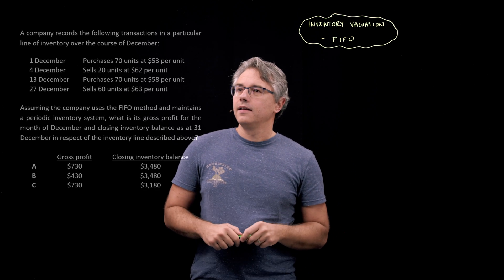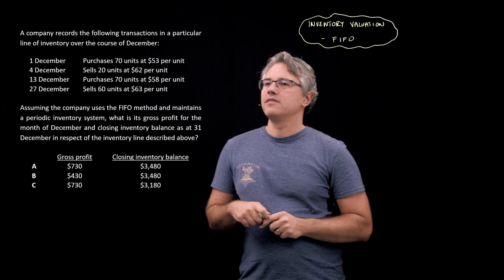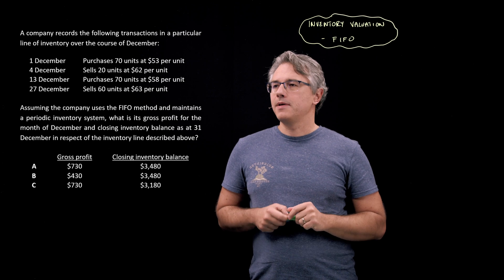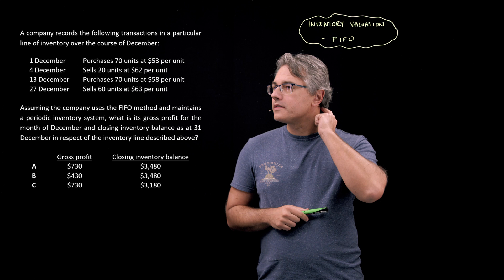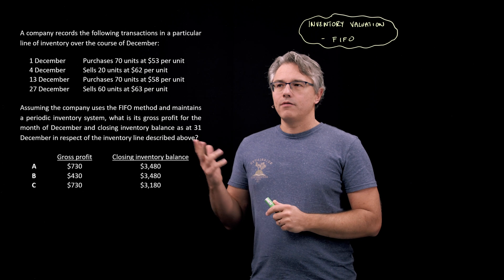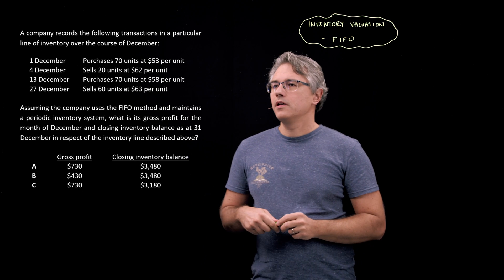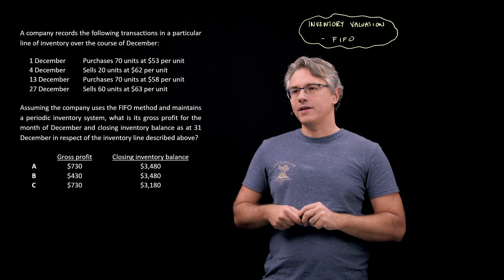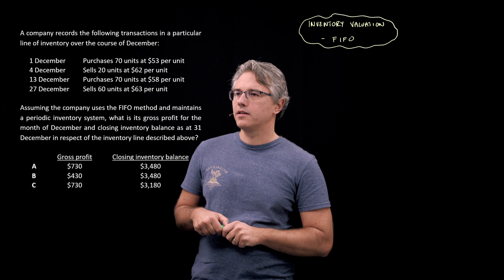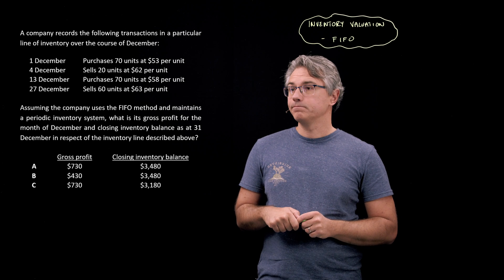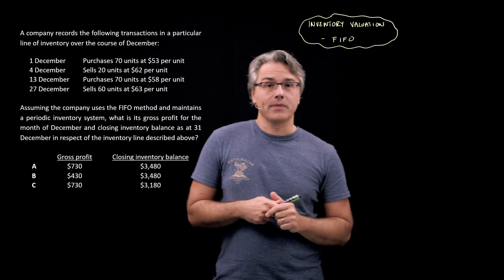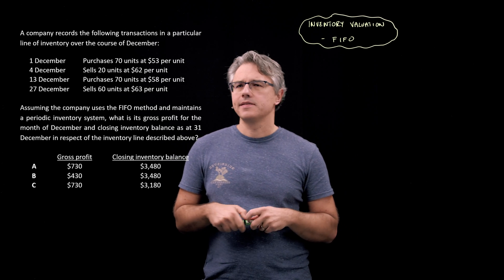If this is something you want to get right in the exam, do keep watching and let's get solving. So this is our question. A company records the following transactions in a particular line of inventory over the course of December. Over the four days mentioned, it makes purchases and sales of different amounts of units at different prices. Assuming the company uses the FIFO method and maintains a periodic inventory system, what is its gross profit for December and closing inventory balance as at the 31st of December? Let me write down what we mean by a periodic inventory system.